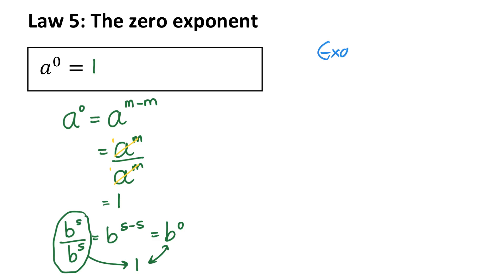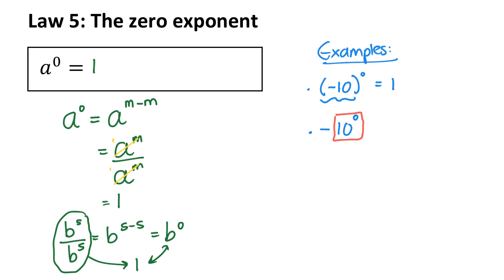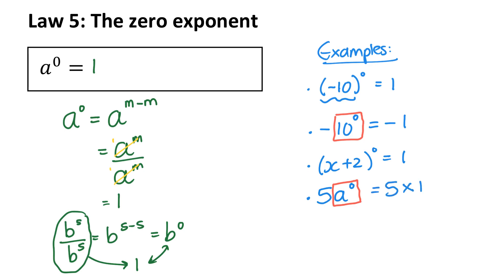Let's look at some examples. If I've got negative 10 to the power of 0, everything here is to the power of 0, so the answer is 1. What if I've got negative 10 and just the 10 is to the power of 0? The exponent only applies to exactly what it's next to, so the 10 becomes 1, and the answer is negative 1. Even if I'm adding values inside a bracket and the whole bracket is to the power of 0, that equals 1. But if I have 5a to the power of 0, only a is to the power of 0, so that's 5 times 1 equals 5. In summary, a zero exponent has a value of 1.